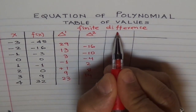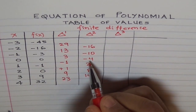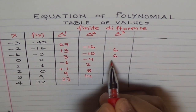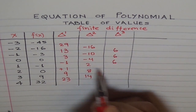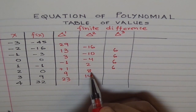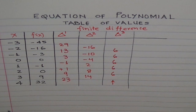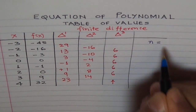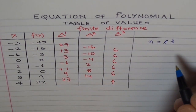So let's continue and find the third finite difference. Minus 10 minus 16 is 6. Minus 4 minus 10 is 6. 2 minus of minus 4 is 6. 8 minus 2 is 6. And 14 minus 8 is 6. So this finite difference is constant. That means the degree of the polynomial n is equal to 3, because the third finite difference is constant.